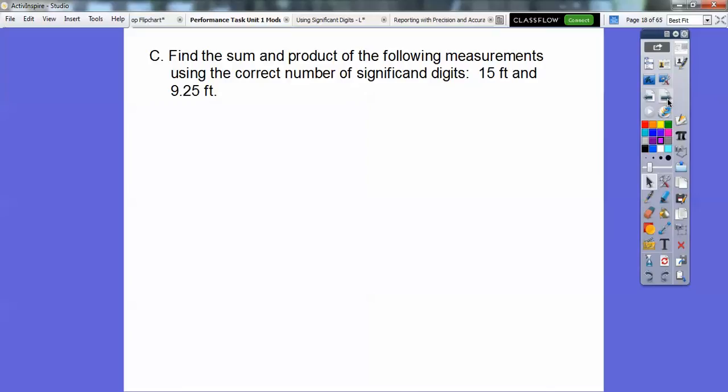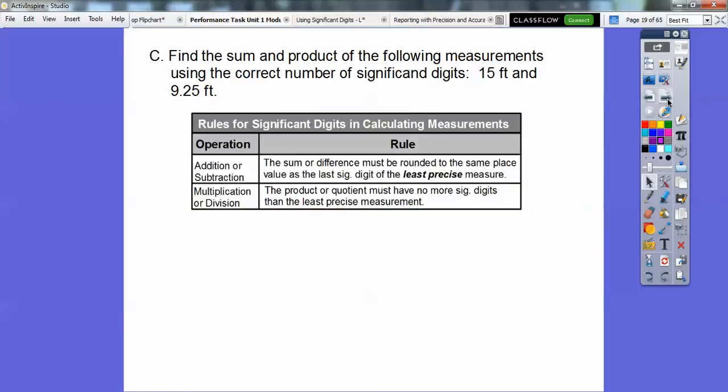Find the sum and product of the following measurements using the correct number of significant digits. We have 15 feet and 9.25 feet. This was in our last lesson. So when we add or subtract and we're talking about the rules for significant digits, the sum or difference when we add or subtract must be rounded to the same place values of the last digit, the digit in the least precise measurement. This one's the least precise because the most precise has the most decimals carried out. This one's rounded in the ones position.